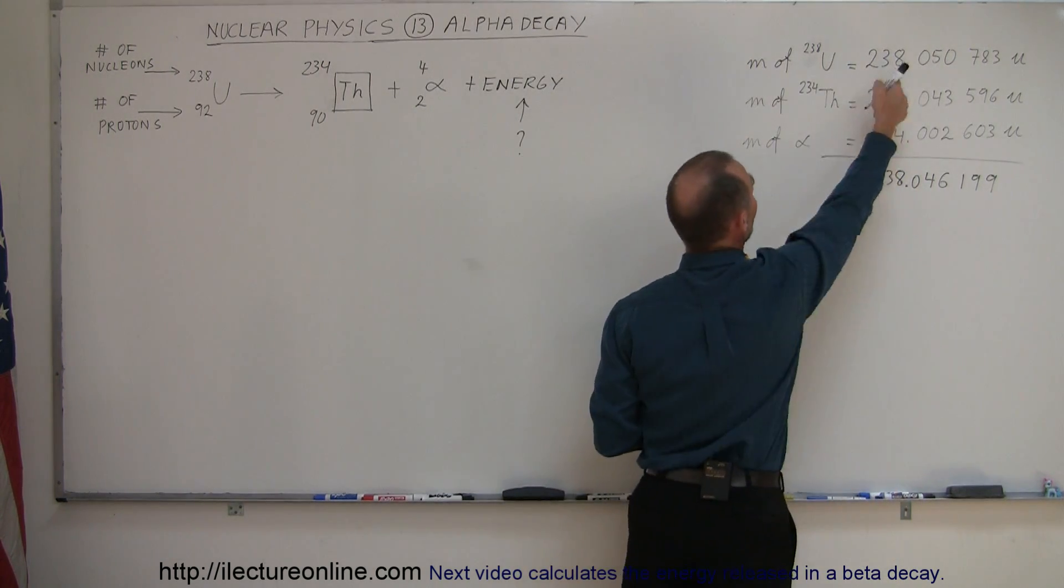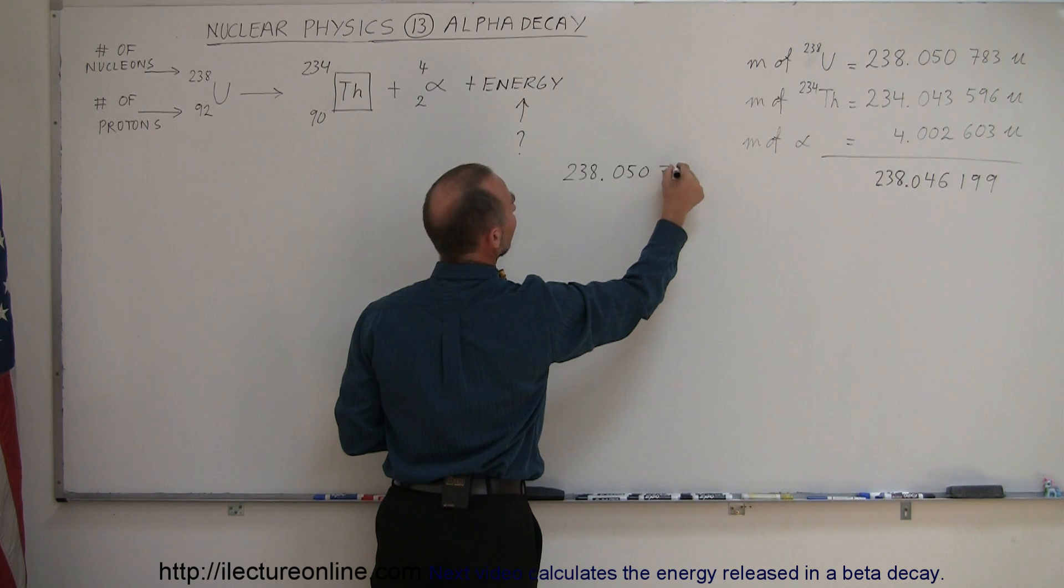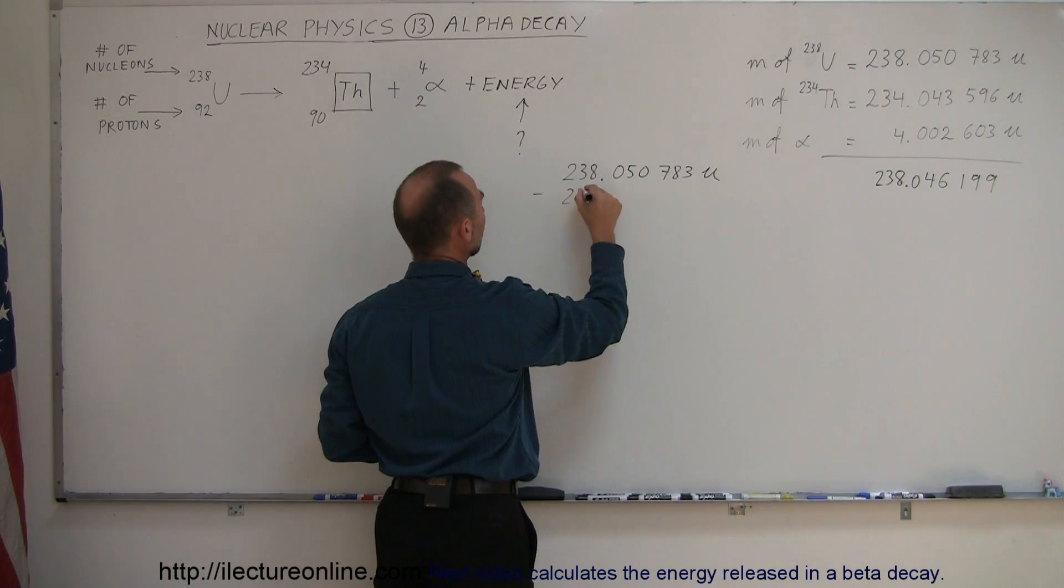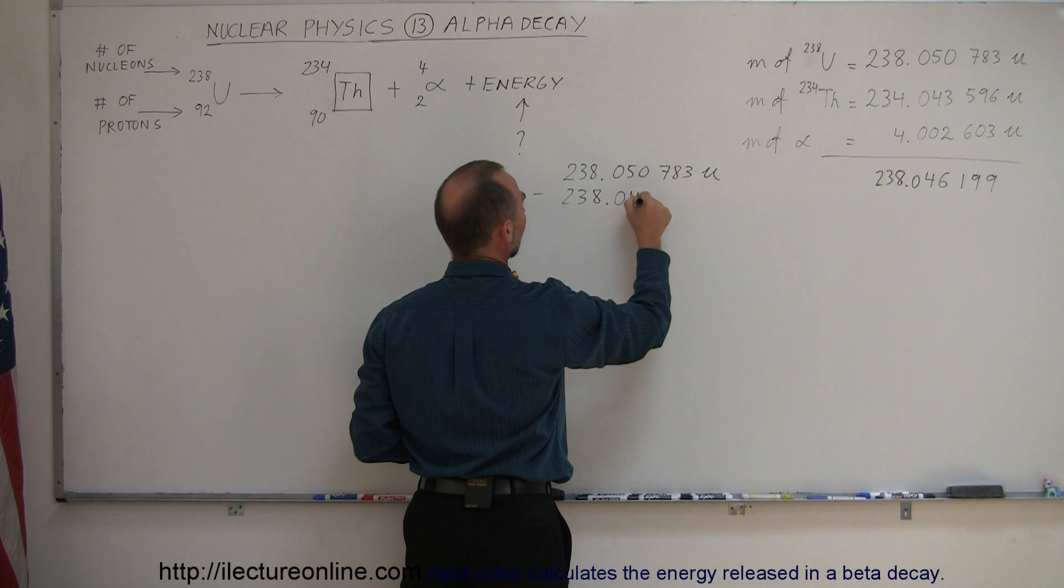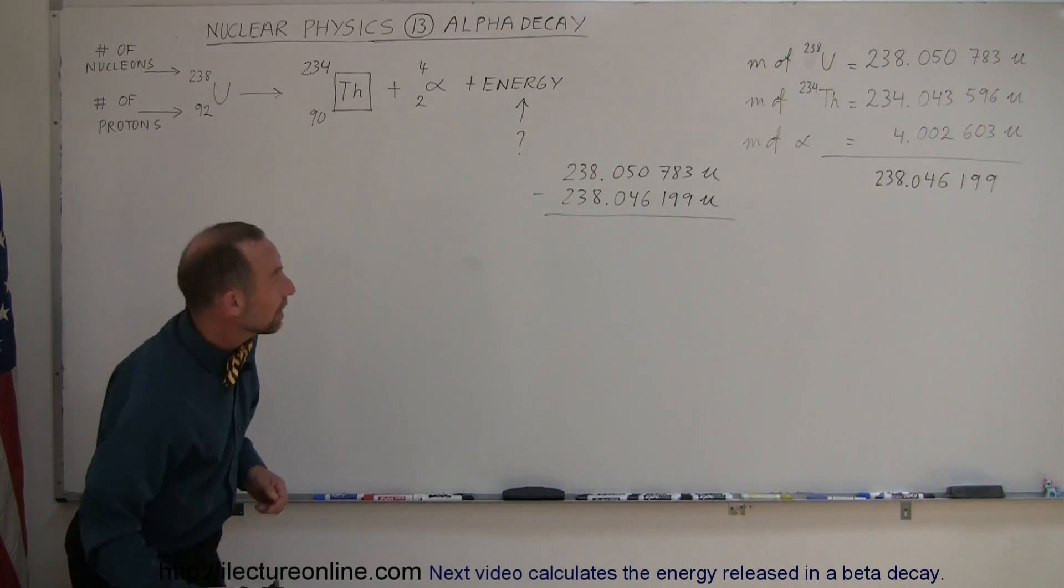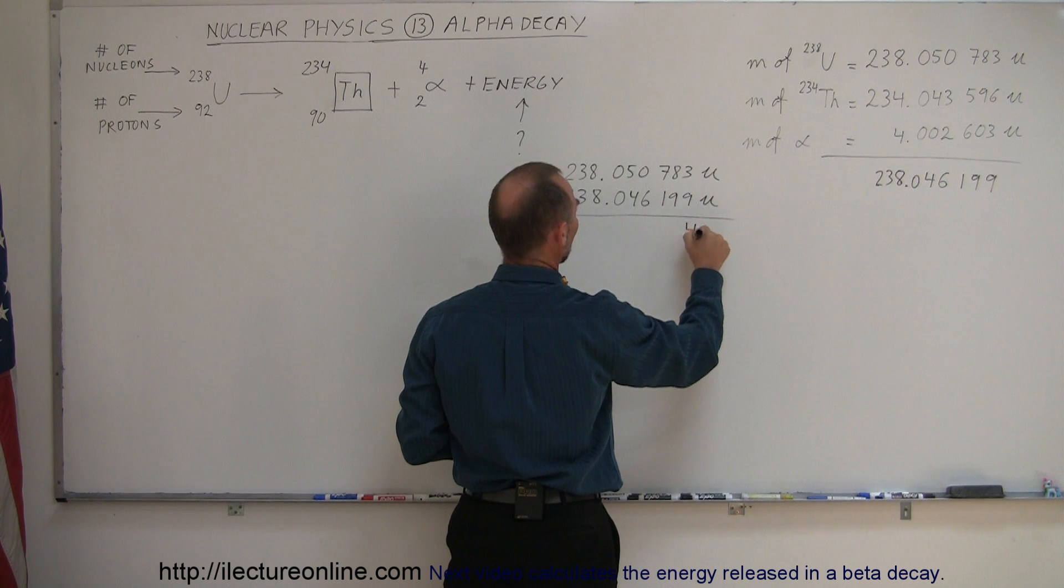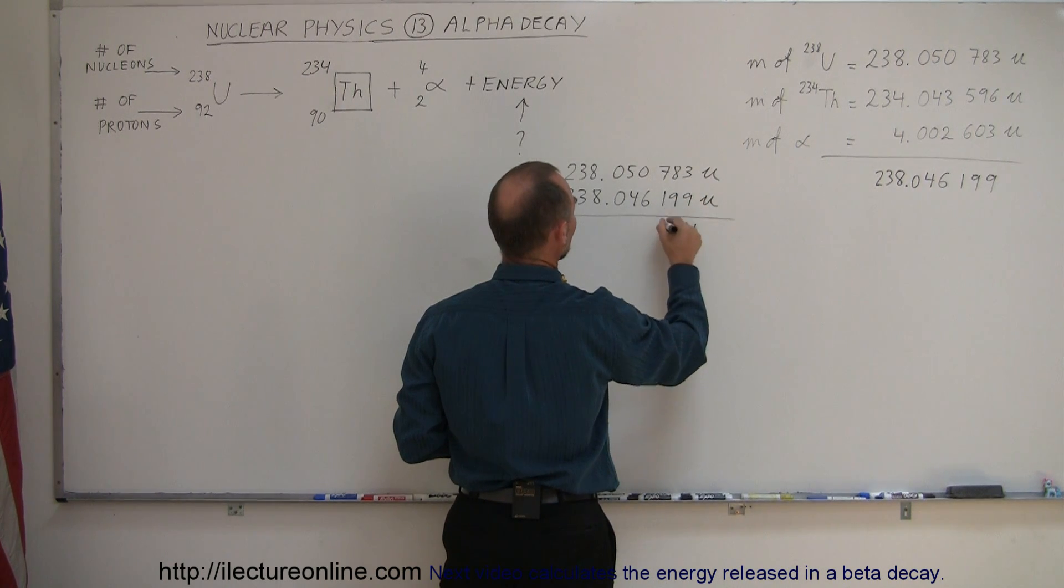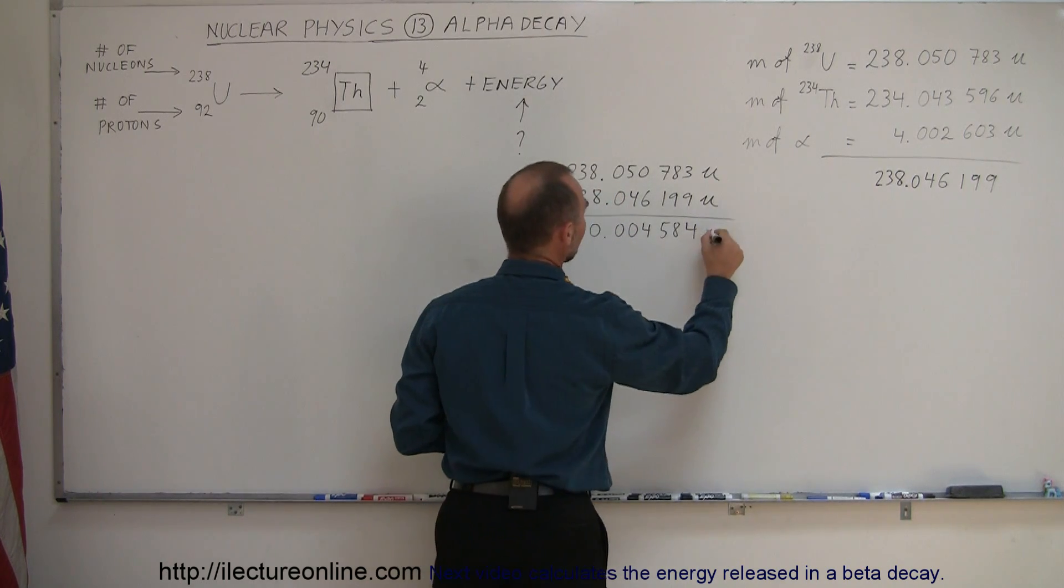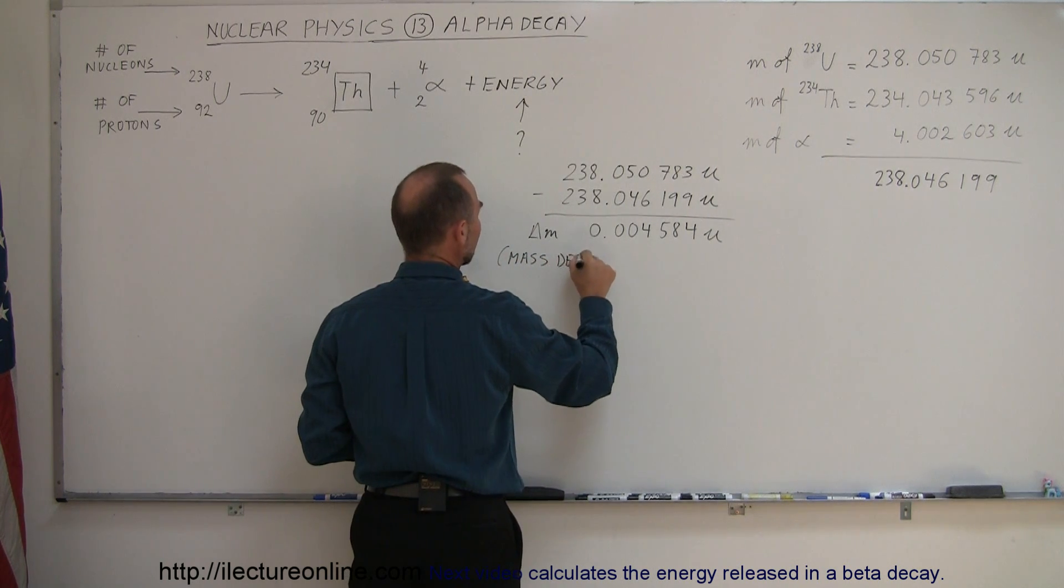So if we now subtract this from that, let me do that over here. So we have 238.050783 atomic mass units, which is the mass of the uranium atom, and we subtract from that 238.046199 atomic mass units, which is the sum of the mass of the alpha particle and of the thorium atom. If we subtract those two, I guess I don't really need a calculator, that's 13 minus 9 is 4, that's 17 minus 9 which is 8, that's 6 minus 1 which is 5, that's 10 minus 6 which is 4, and that would be 0.004584. And so this is what we call the delta M, or also known as the mass defect, the mass lost by this nuclear reaction, this decay reaction.